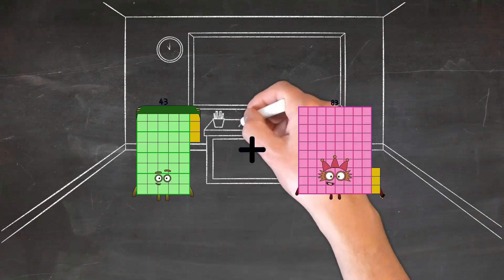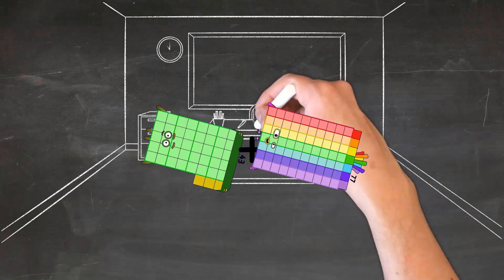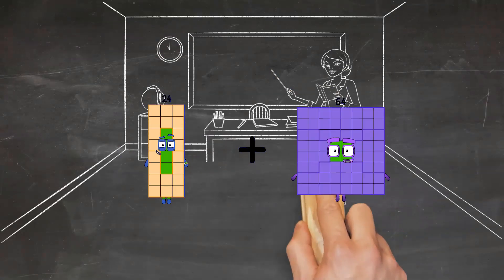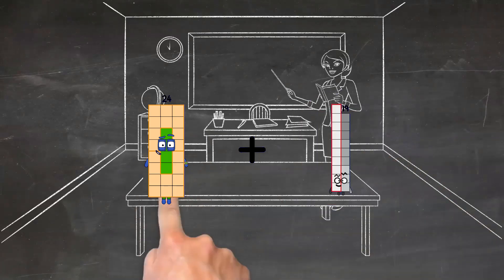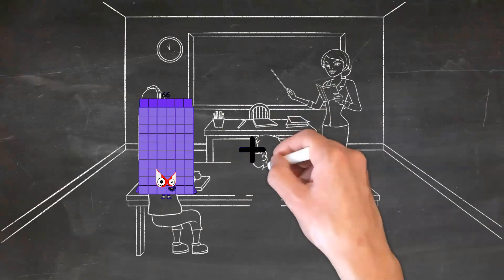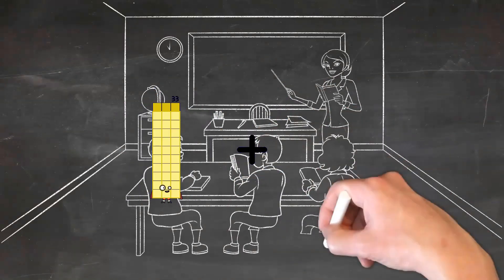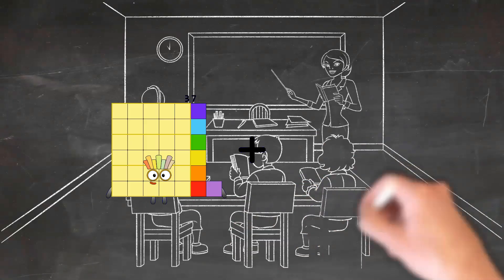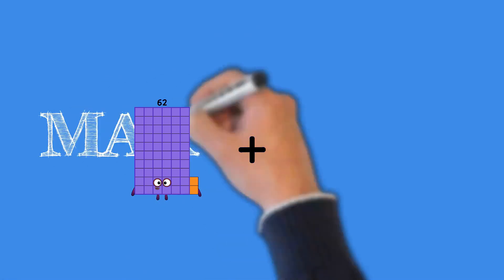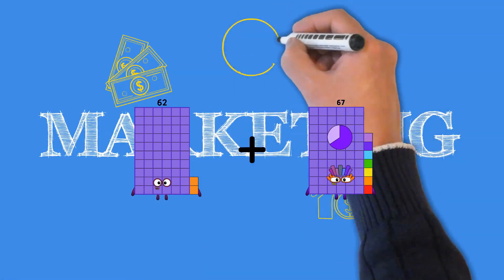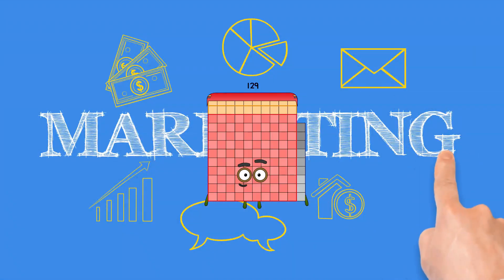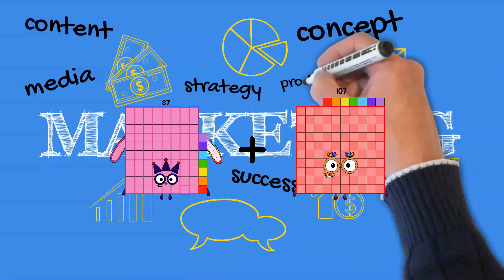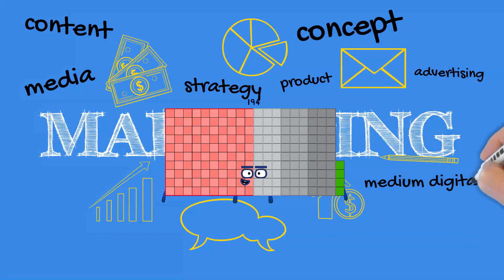43 plus 77 equals 120. 24 plus 19 equals 43. 33 plus 14 equals 47. 62 plus 67 equals 129. 87 plus 107 equals 194.